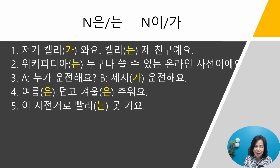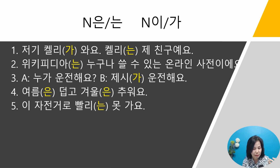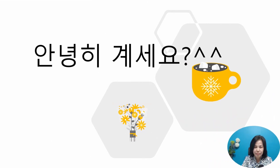OK, I think you can choose the right particle now. Let's check together. Number one: 저기 켈리가 와요 / 켈리는 제 친구예요 — new information then known information. Number two: Wikipedia는 누구나 쓸 수 있는 온라인 사전이에요 — definition. Number three: 누가 운전해요? 제시가 운전해요 — question with 누가, answer with 가. Number four: 여름은 덥고 겨울은 추워요 — contrast. Number five: 이 자전거로 빨리는 못 가요 — emphasis. 오늘 수업이 도움이 되었어요. 다음 시간에 만나요. 안녕히 계세요.